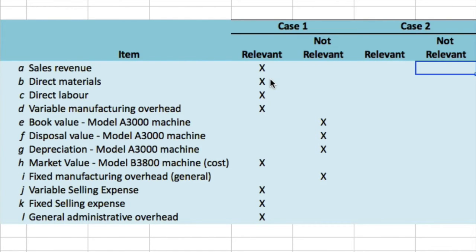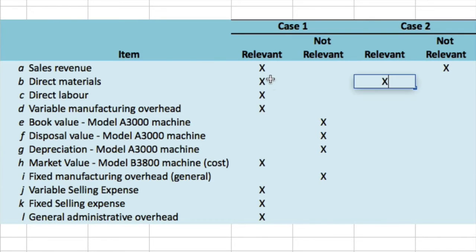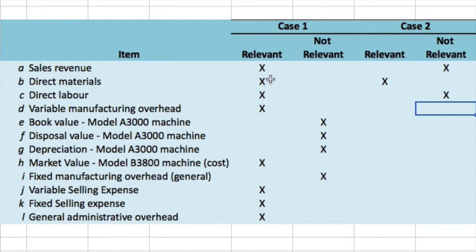If it's not going to change sales, then sales are not relevant — sales will be the same under both scenarios. Always start by asking: what are the sunk costs I can ignore, and what costs will stay the same under both scenarios? Direct materials — we're told they are going to change, so that's relevant. If sales revenue and production are not going to change, direct labor is probably not going to change, and variable manufacturing overhead is not going to change. What about the book value of the A3000 machine?